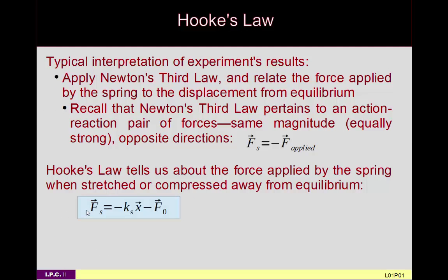So Hooke's law in vector form looks like this: the force that a spring is applying is negative ks times x, minus F₀. F₀ is how much force you would apply before the spring begins to stretch at all. F₀ is usually zero for a spring you can also compress, because there is a normal force between coils on a tightly coiled spring; you apply force to loosen that normal force, and it begins to stretch when that normal force hits zero. In its traditional form: F = -ks·x, with F₀ set to zero.